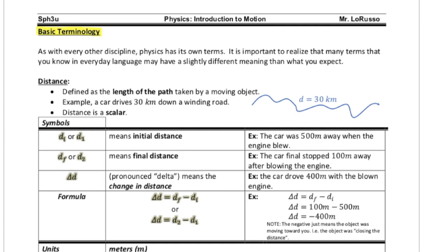In everyday language, they're often used as synonyms, but in physics they're not. Specifically, distance is different from displacement and speed is different from velocity. So we're going to do our best to explain